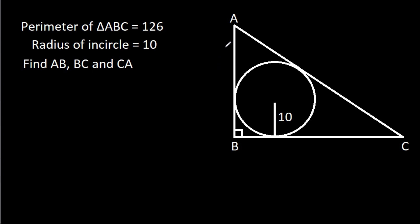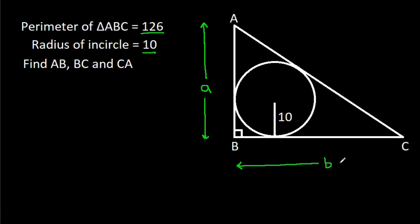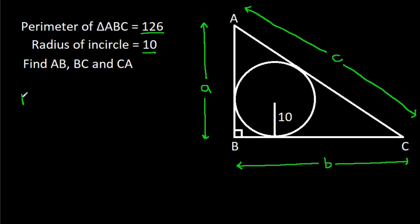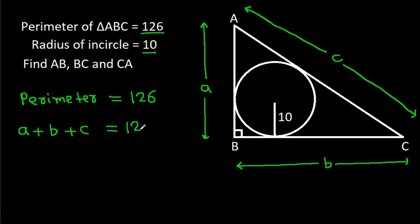In this video, we have been given that the perimeter of triangle ABC is 126 and the radius of the incircle is 10. We have to find AB, BC, and CA. So, suppose AB is A, BC is B, and CA is C. We have the perimeter equal to 126, that means A plus B plus C equals 126.